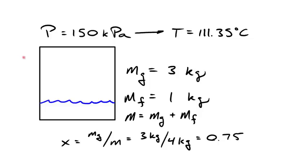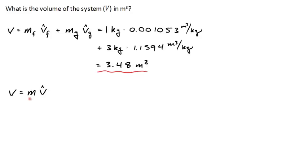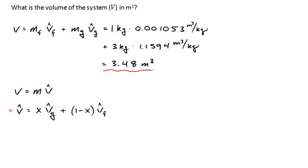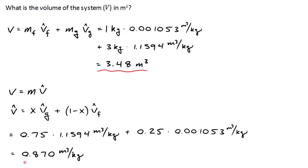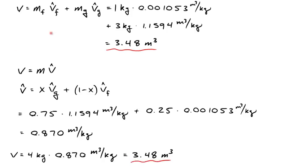Alternatively, we can find the average specific volume of the whole system: v_avg = x·v_g + (1−x)·v_f, then multiply by the total mass. This gives an average specific volume of 0.87 cubic meters per kilogram, and multiplying by the total mass of 4 kilograms again gives a total volume of 3.48 cubic meters — confirming both methods agree.